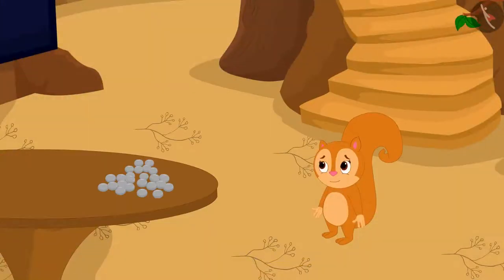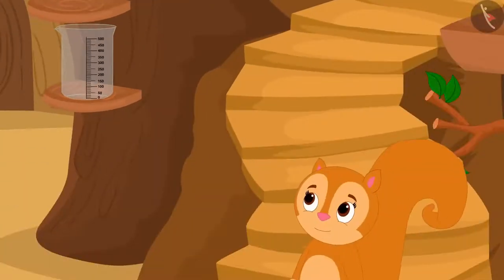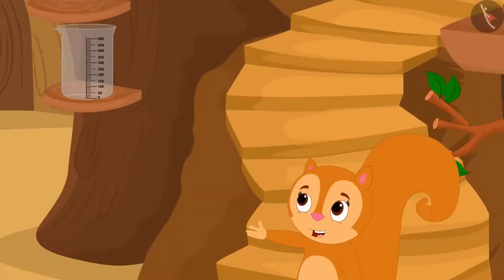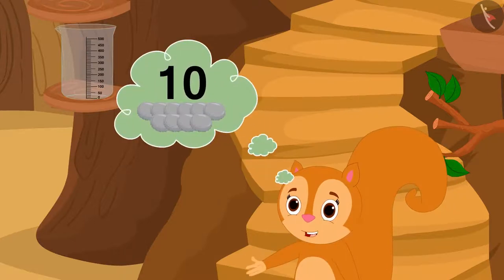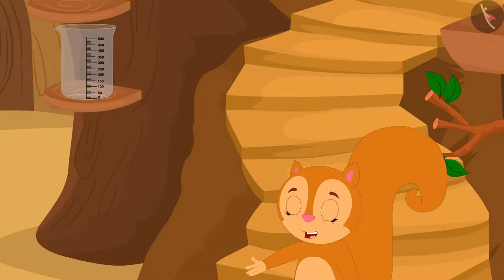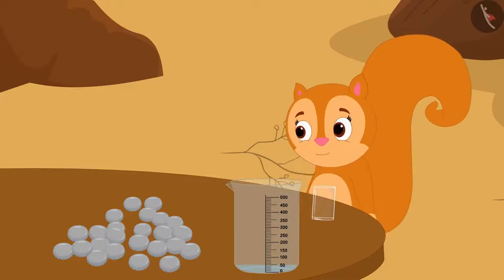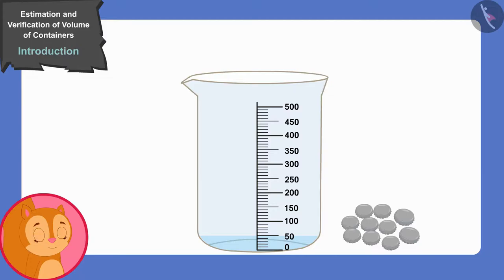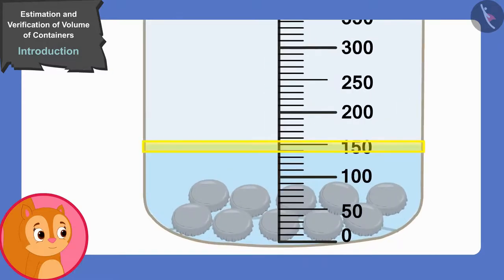Just then, her eyes went to the measuring cup kept in her house. Oh yes! With the help of this measuring cup, I will first find out what the volume of 10 bottle caps is. Chanda filled 50 milliliters of water in that measuring cup. Then she put 10 covers in that measuring cup and the water level came up to 150 milliliters.